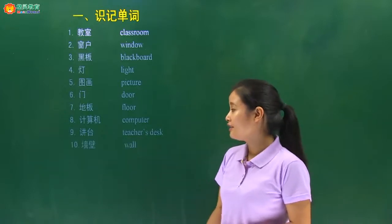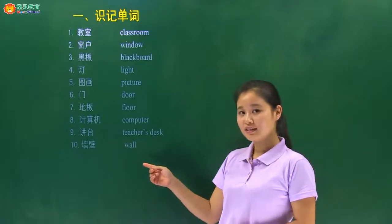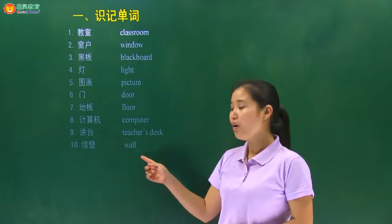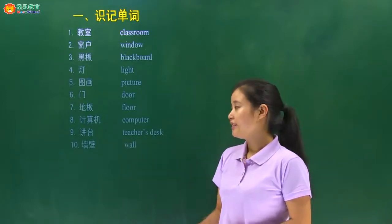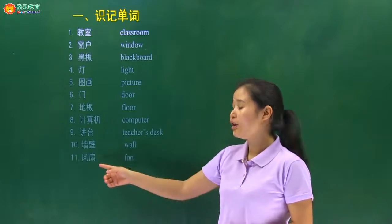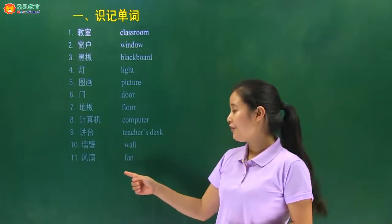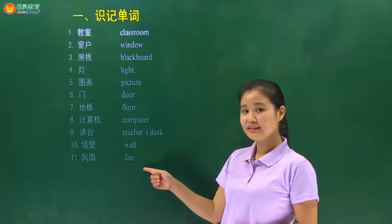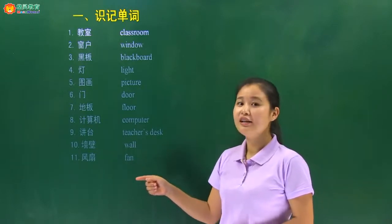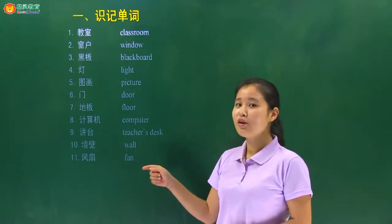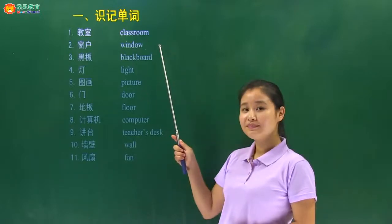Next one，墙壁，wall. Last one，最后一个，风扇，fan. 现在再跟我每一个单词读一遍：classroom, window, blackboard, light, picture, door, floor, computer, teacher's desk, wall, fan.